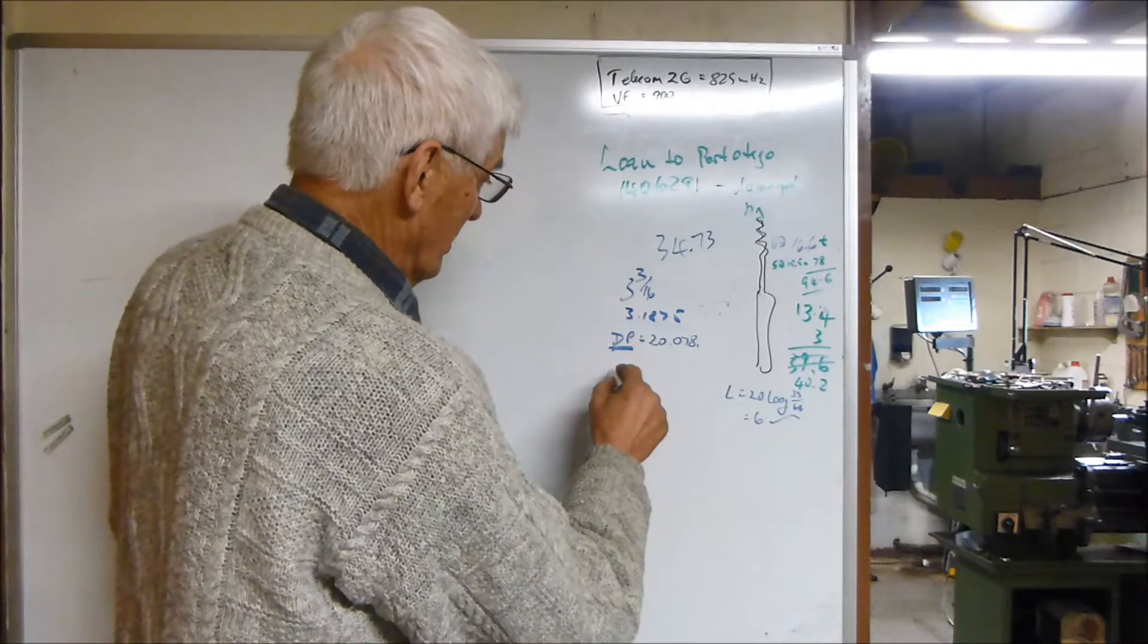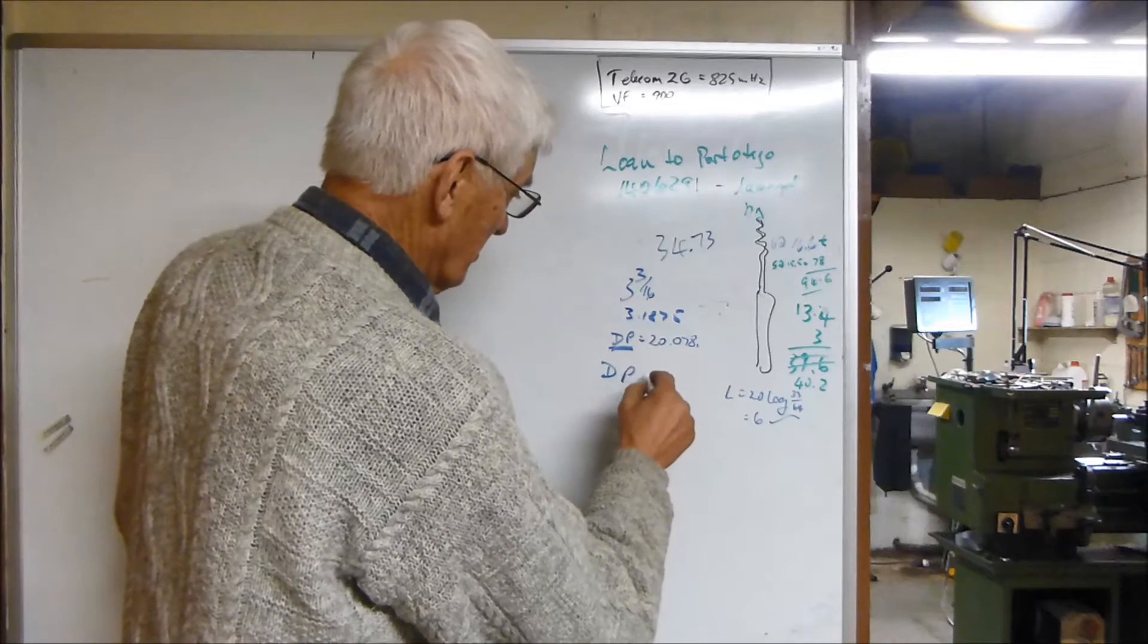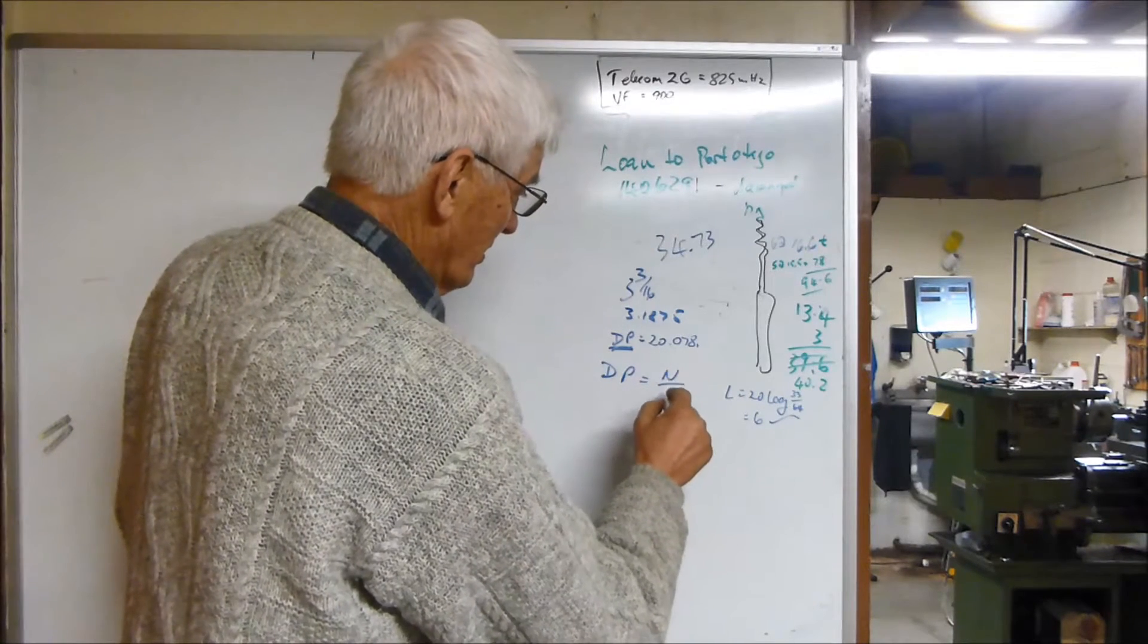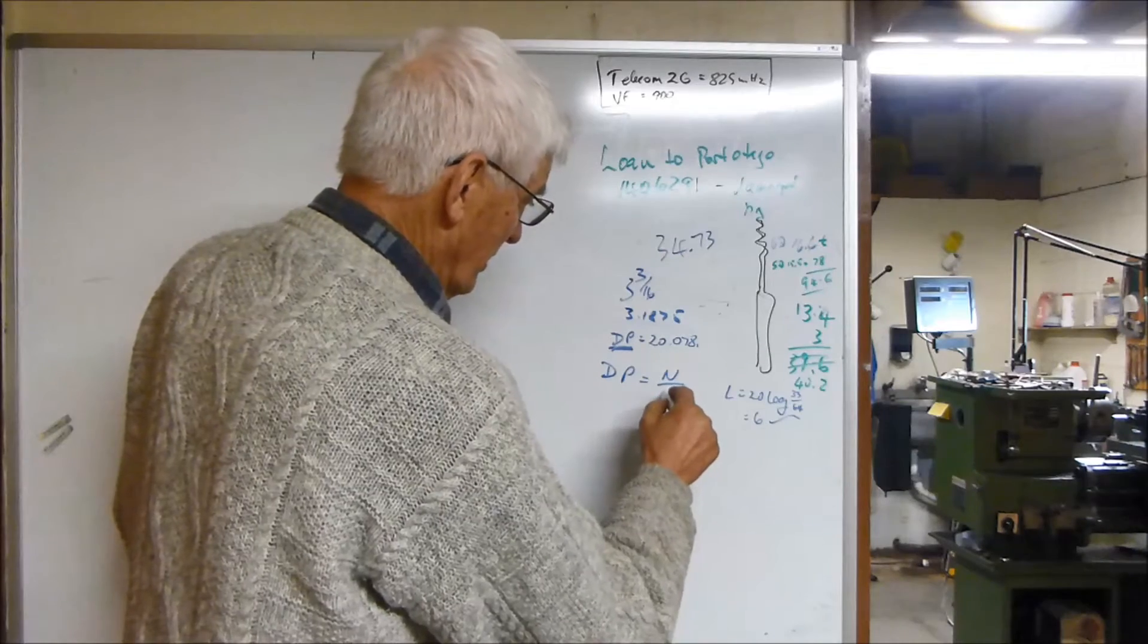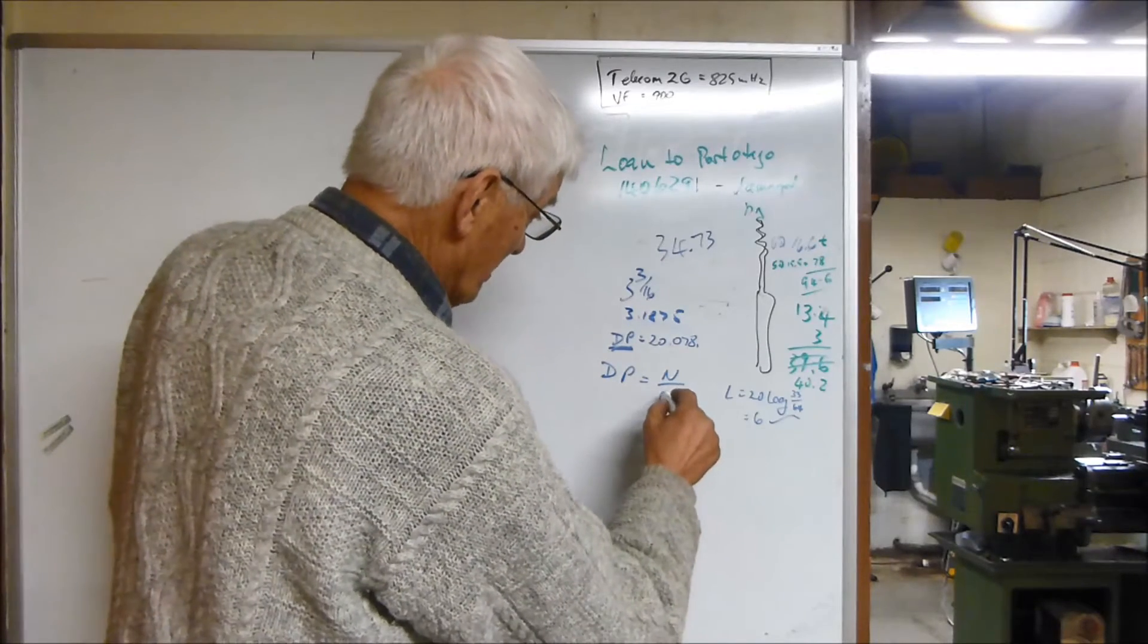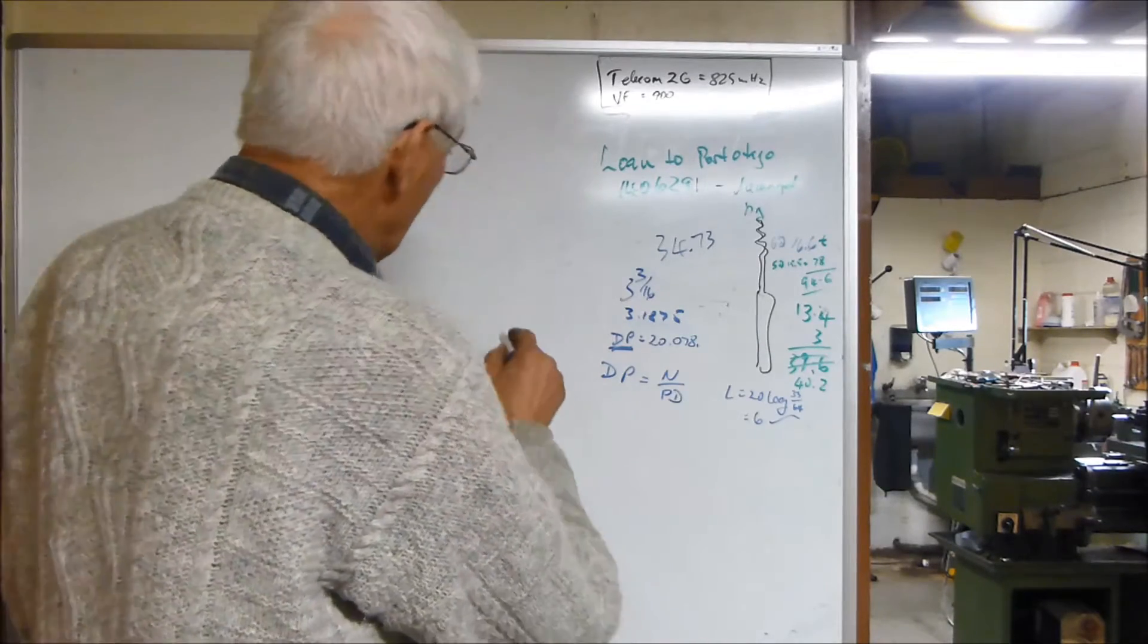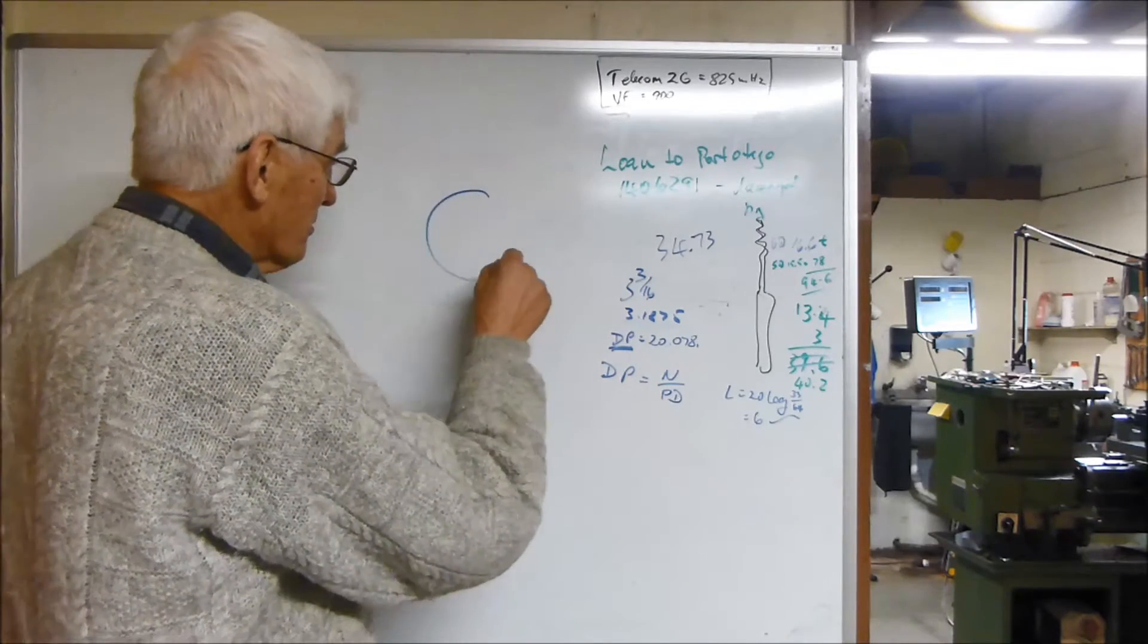The DP is equal to the number of teeth divided by the pitch diameter. The pitch diameter of the gear is the rolling diameter.